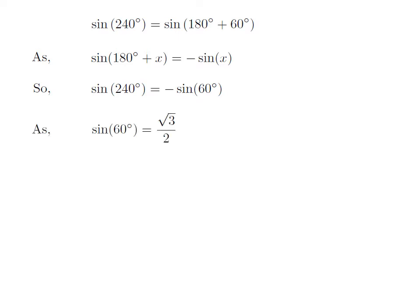We know the value of sine of 60 degree is equal to square root of 3 upon 2. So, the value of sine of 240 degree is equal to minus square root of 3 upon 2.